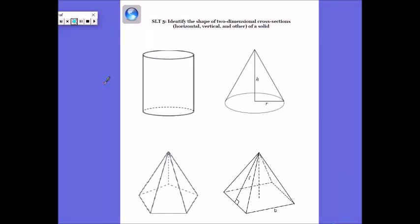All right, so today we're going to identify the shape of two-dimensional cross sections. So look at the cylinder. What kind of cross section can you guys get? Yeah, we kind of went over this yesterday, right? We can have circle. What else? Rectangle. What else?